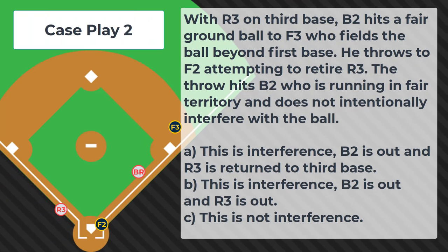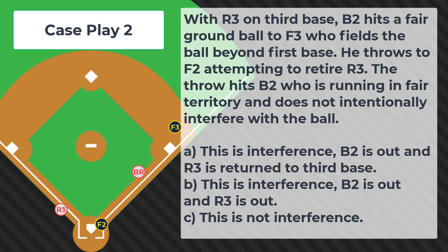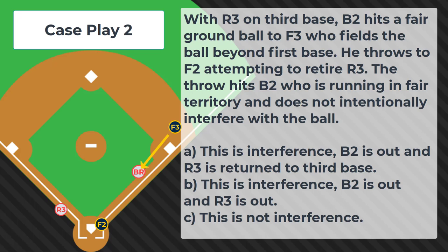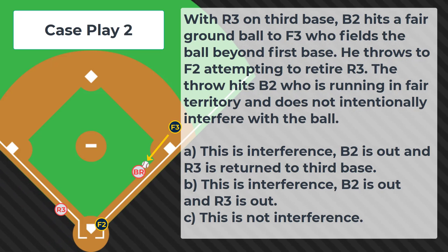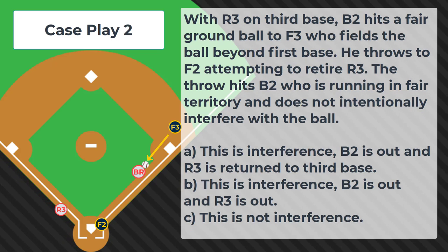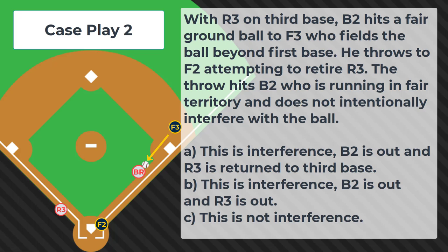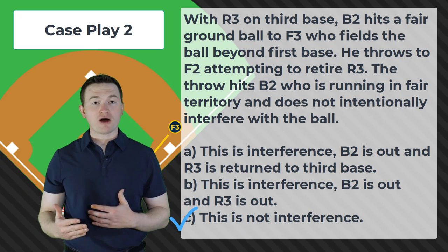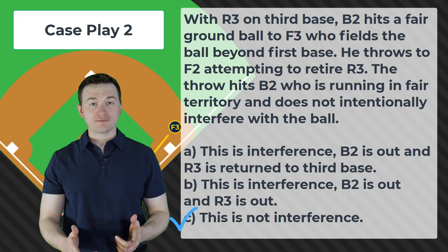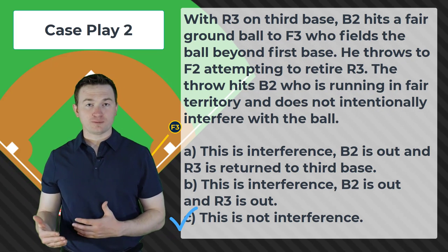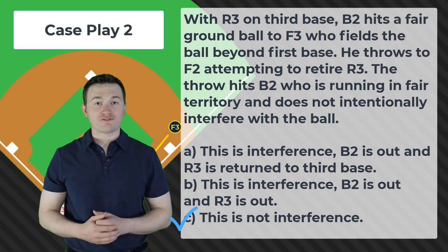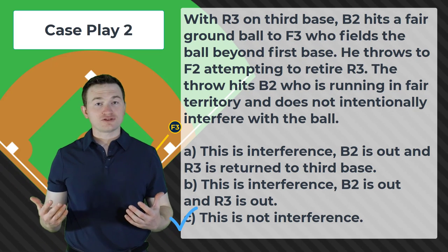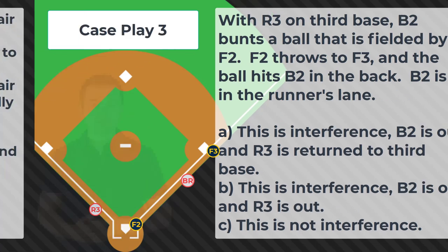Case play number two. With R3 on third base, B2 hits a fair ground ball to F3, who fields the ball beyond first base. He throws to F2 attempting to retire R3. The throw hits B2, who is running in fair territory and does not intentionally interfere with the ball. Is this A — interference, B2 is out and R3 is returned to third; B — interference, B2 is out and R3 is out; or C — this is not interference? Again, the answer is C, this is not interference. Because this ball is being fielded by the first baseman and thrown to the plate, the runner's lane does not apply. So long as the runner does not do anything to intentionally interfere with that throw from the first baseman to the catcher, there's no violation and the play stands.